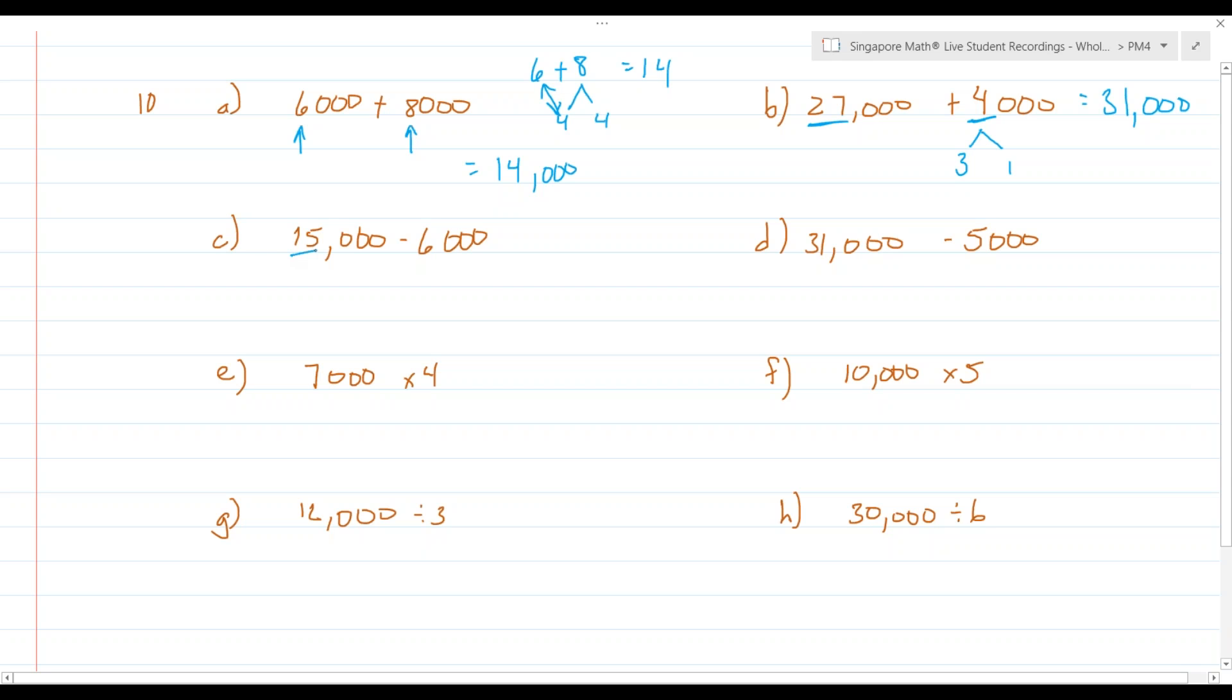So, 15,000 minus 6,000, 15 take away 6, that's 9, and the answer is going to be 9,000. And then, of course, in a similar way,